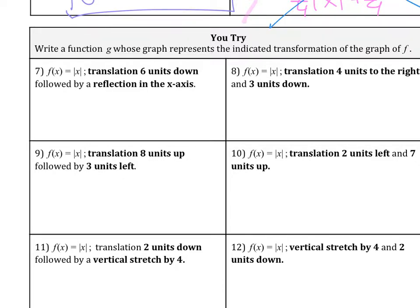We have a translation 6 units down, followed by a reflection in the x-axis. Let's do 6 units down. Six units down means we're going to subtract 6 from the back. So absolute value of x, 6 units down means subtracted by 6.